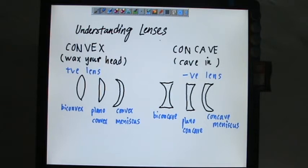In front of you are two sets of diagrams which show different types of convex and concave lenses. When you look at convex lens, try to remember 'wax your head' - your head has a shape like this part. This one is called a biconvex lens, this one is plano convex because this part is actually a plane surface, and this one is convex meniscus.